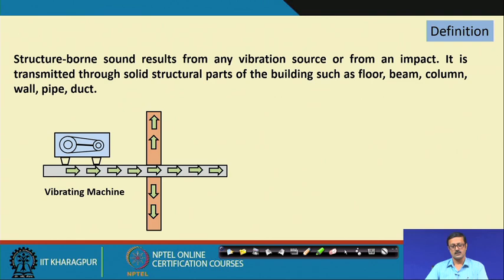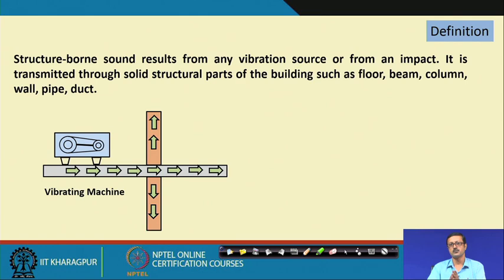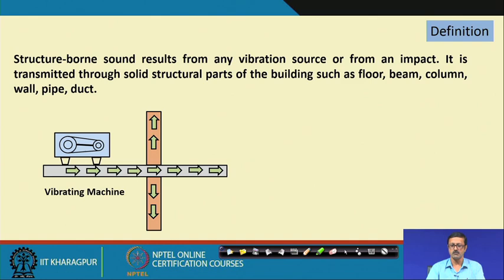Structure-bound sound, as discussed in lecture 31, refers to one of two ways sound propagates from one place to another. Air-bound sound requires evaluating transmission loss through a partition wall between source and receiver rooms. Structure-bound sound, by contrast, propagates through structural members embedded in a building system due to vibration or impact, and this mechanical vibration carries sound from one place to another. The velocity of sound in solids is much faster compared to air.